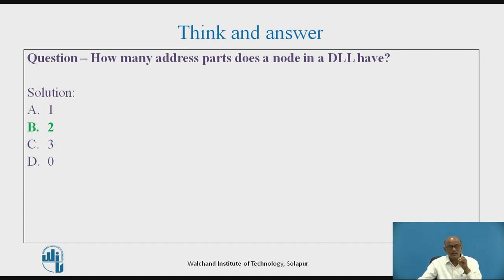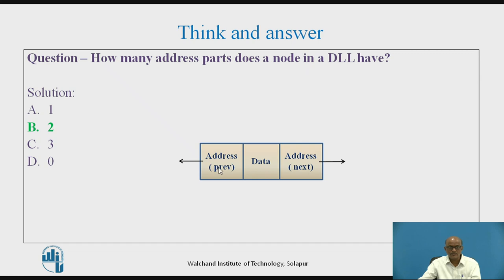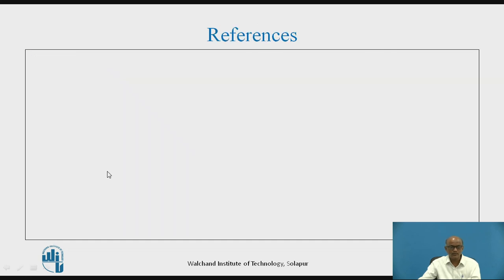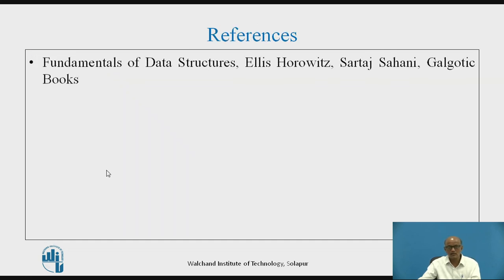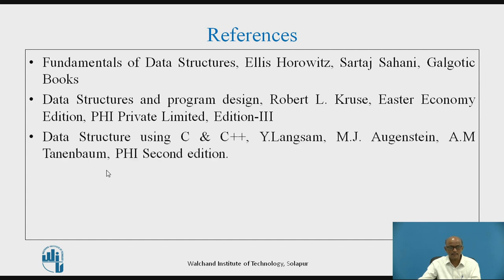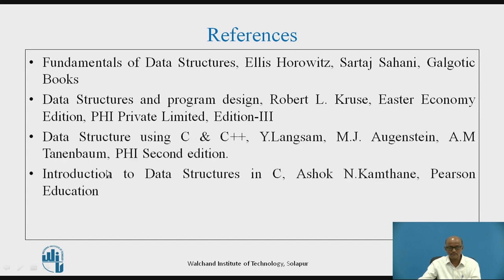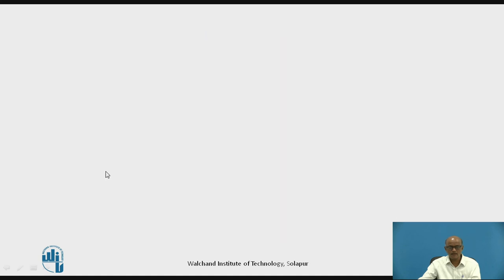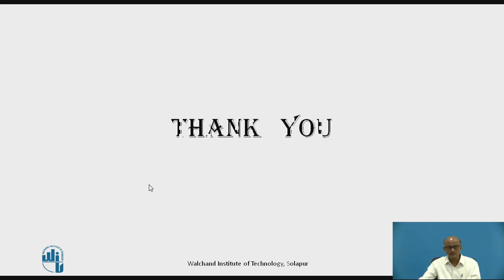In a singly linked list, there is only one address part and one data part. That is the difference between a doubly linked list node and a singly linked list node. The two address parts in a doubly linked list hold the address of the previous node and the address of the next node respectively. The references are listed. I hope you understood how to delete a particular node from the doubly linked list. Thank you.